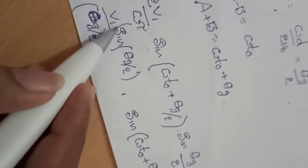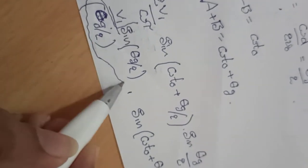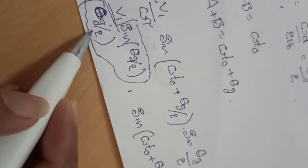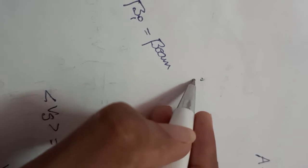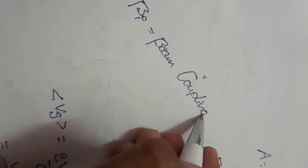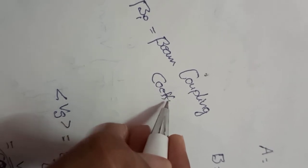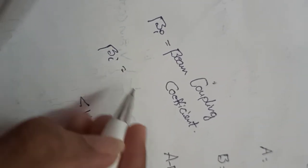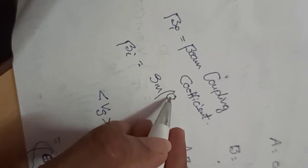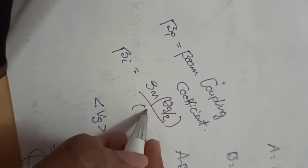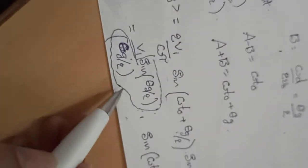Now assume the term sin(theta_z/2) divided by (theta_z/2) is nothing but beta_i — the beam coupling coefficient. Beta_i is the beam coupling coefficient, and it equals sin(theta_z/2) / (theta_z/2). Substituting the beta_i value, the average microwave signal voltage across the buncher cavity gap is: Vs = beta_i × V1 × sin(ωT0 + theta_z/2).